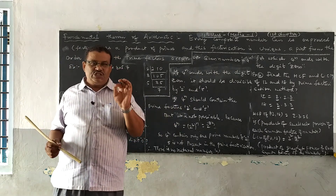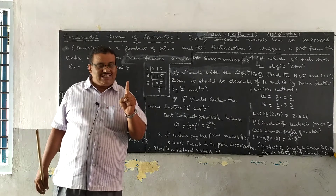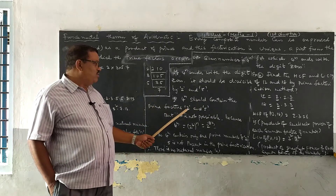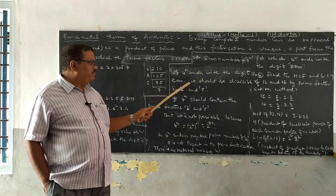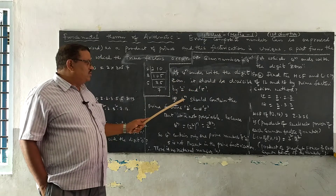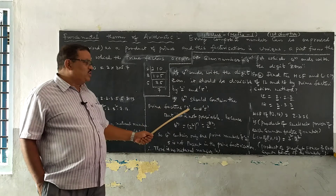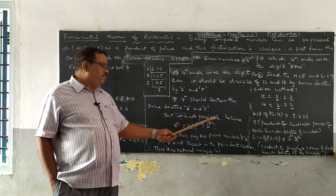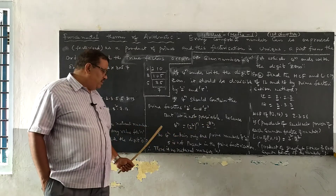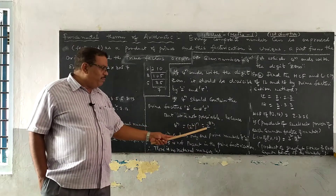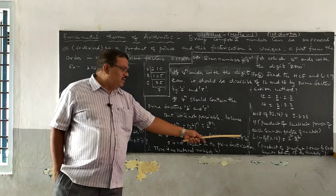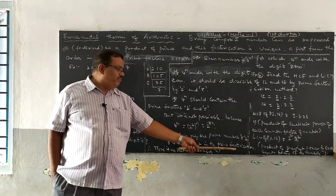Children, the given number is 4 power n. If 4 power n ends with the digit 0, it should be divisible by 2 and 5, because any natural number ending with the digit 0 is definitely divisible by both 2 and 5. So 4 power n should contain the prime factors 2 and 5. But it is not possible because 4 power n can be written as (2²)ⁿ, that is 2 power 2n. That means it contains only one prime number: 2. So 5 is not present in the factorization.